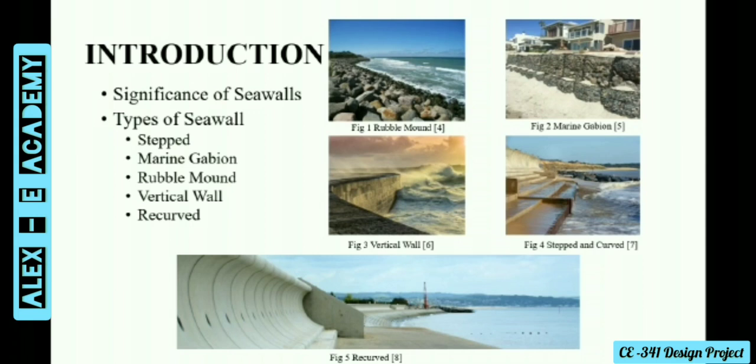Mound-type sea walls are used in less demanding settings where lower-energy erosion processes operate. Vertical sea walls are built in particularly exposed situations; in some cases, piles are placed in front of the wall to lessen wave energy slightly. Recurved sea walls are designed to enable waves to ripple back to the sea. The curve also prevents wave overtopping the wall and provides additional protection for the top of the wall.